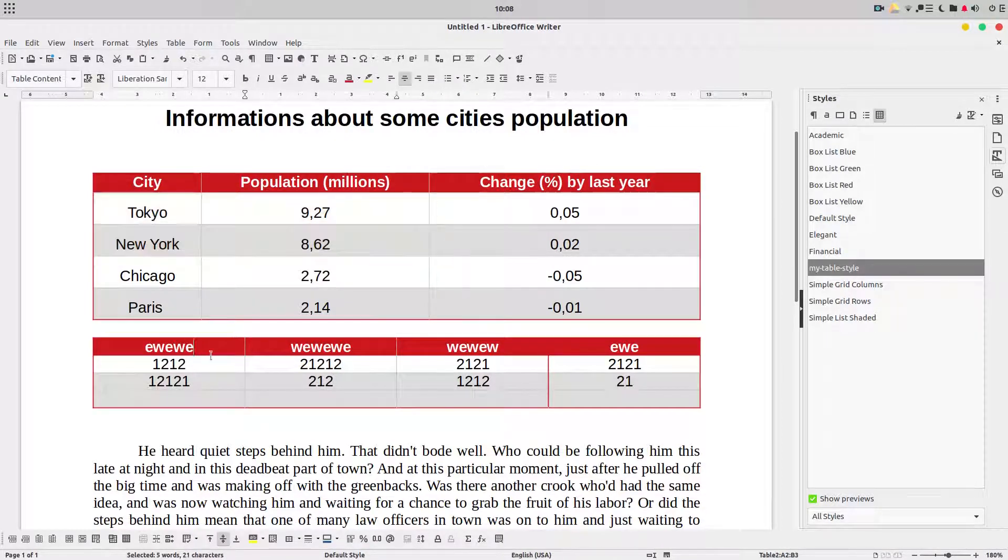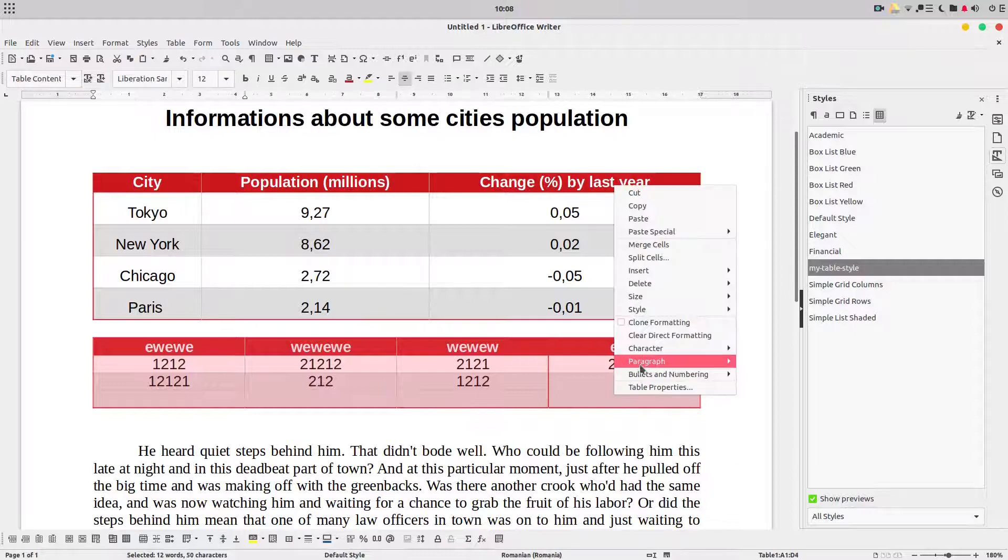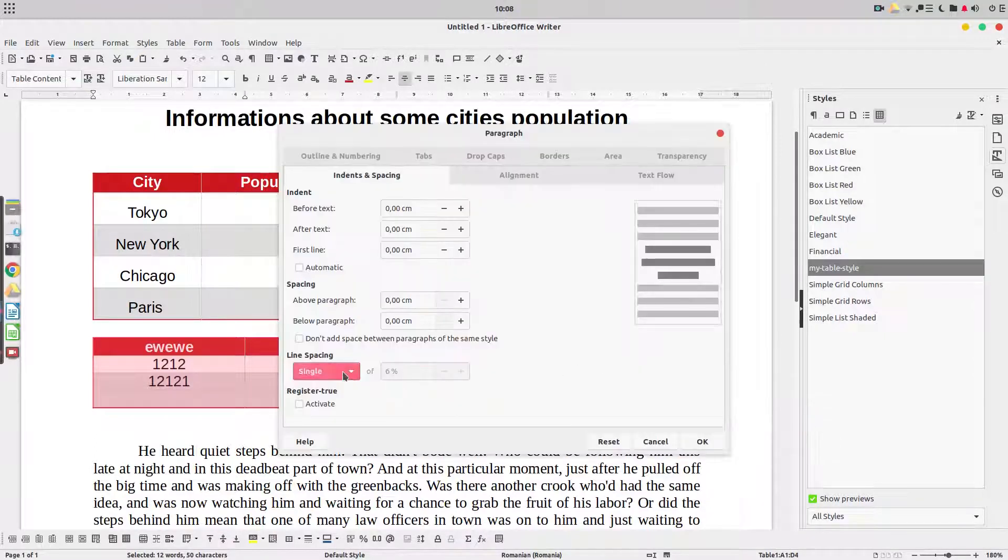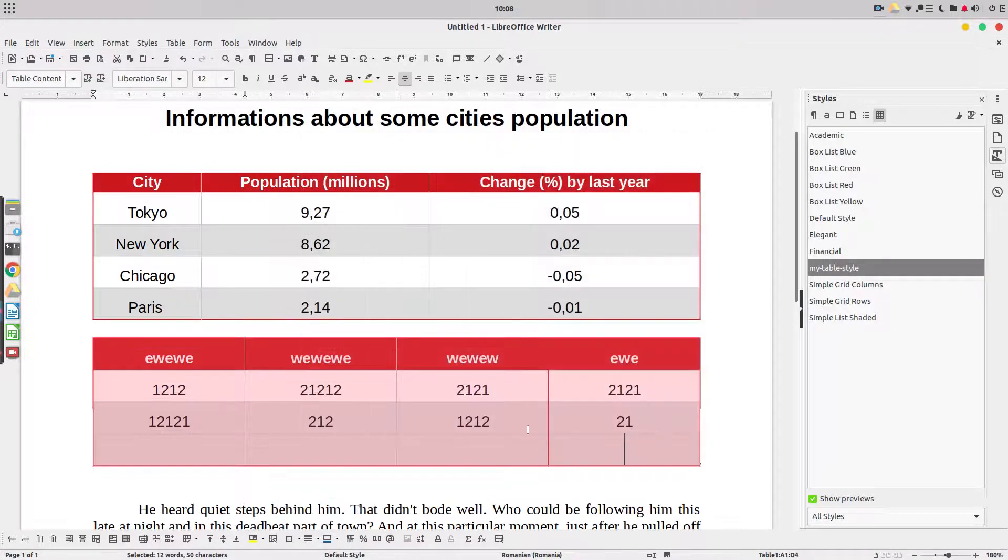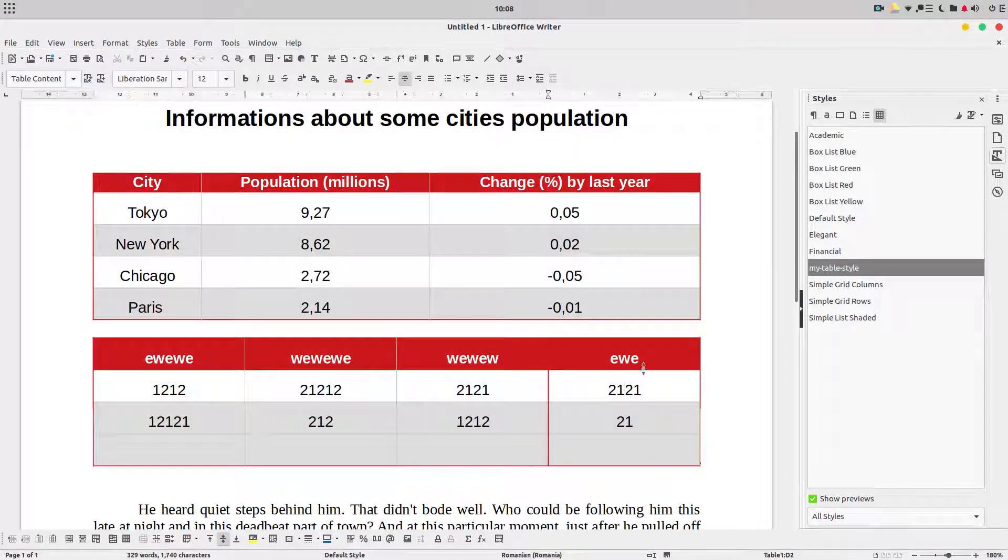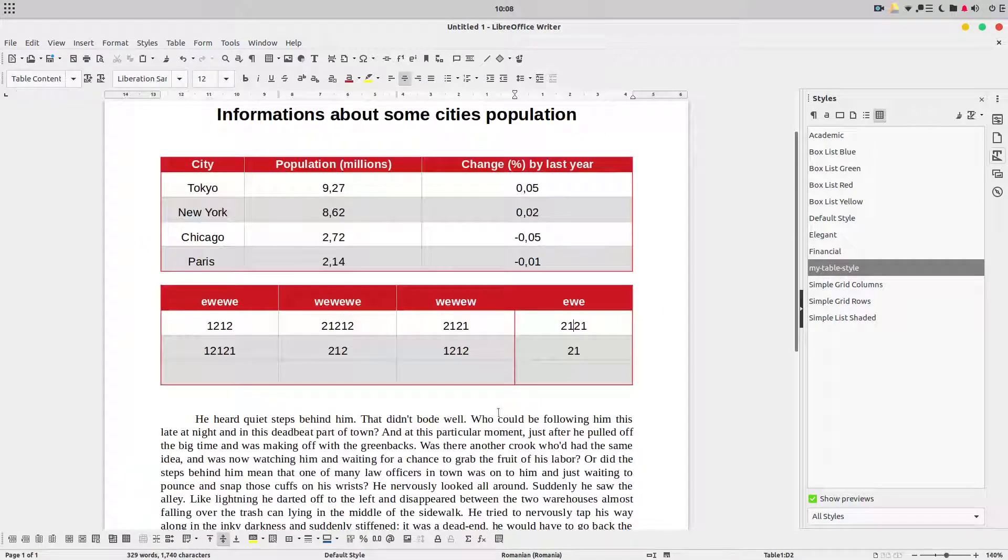But you can see the line height didn't change. We have to manually do that for every table we need. So, it's much easier with styles. It's not so complicated.